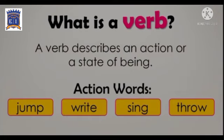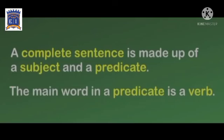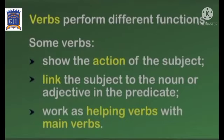Ye actions hai na, ye sare, toh ye kia hai? Verb. Now, a complete sentence is made up of a subject and a predicate. The main word in the predicate is a verb. Students, aap ko pata hai ki subject or predicate kia hoti hai? Toh jho predicate hota hai, jho hame subject ke baare mei batata hai, that is verb.